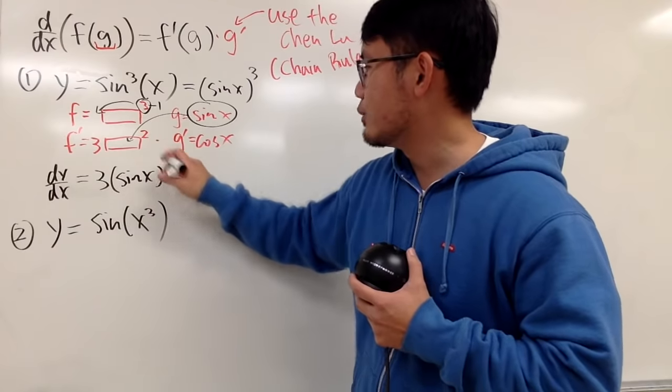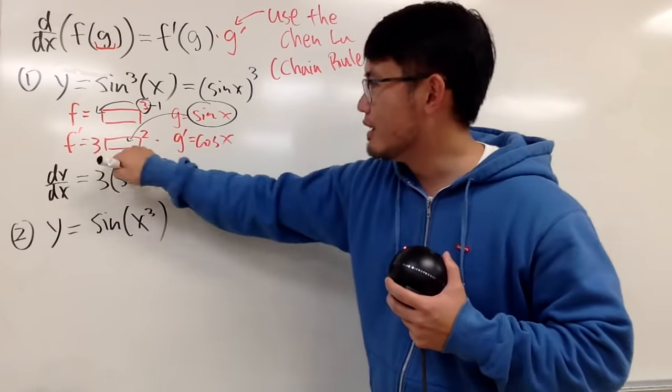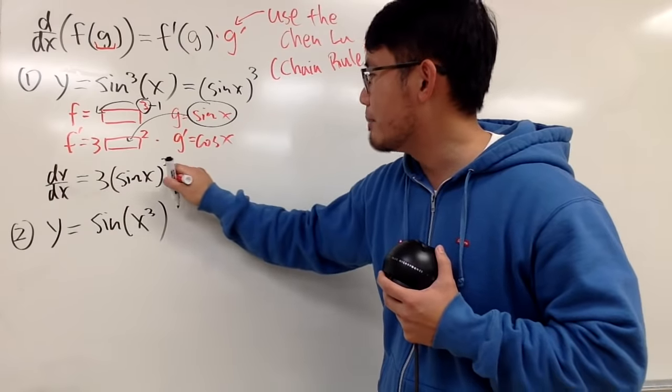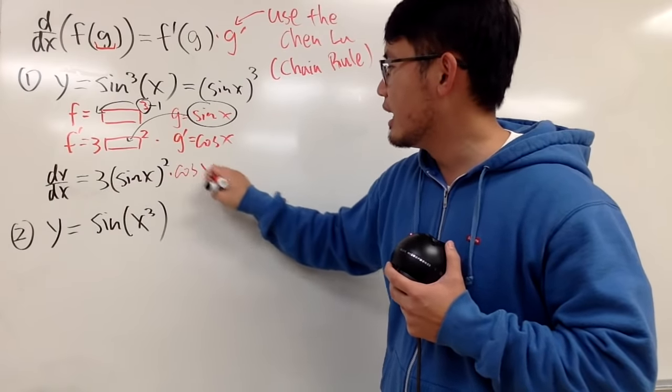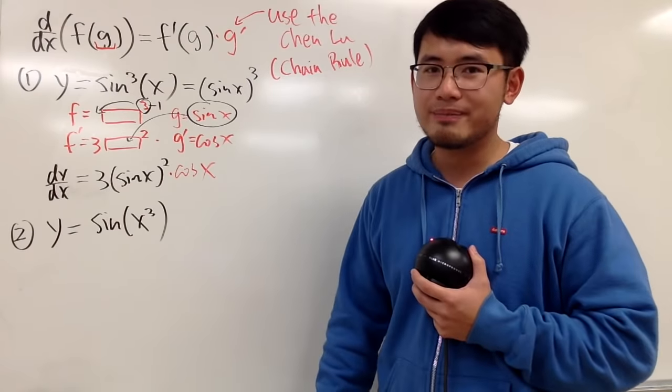And then on the outside, you see, you have this times that. So you multiply by cos x, okay? And this right here is your answer, okay? You put g in the box. That's exactly this portion.